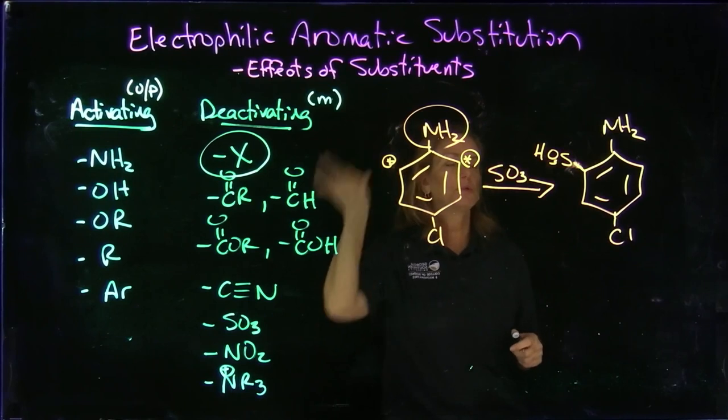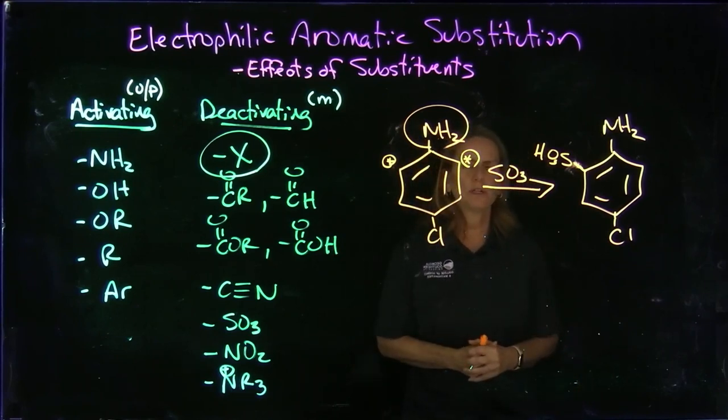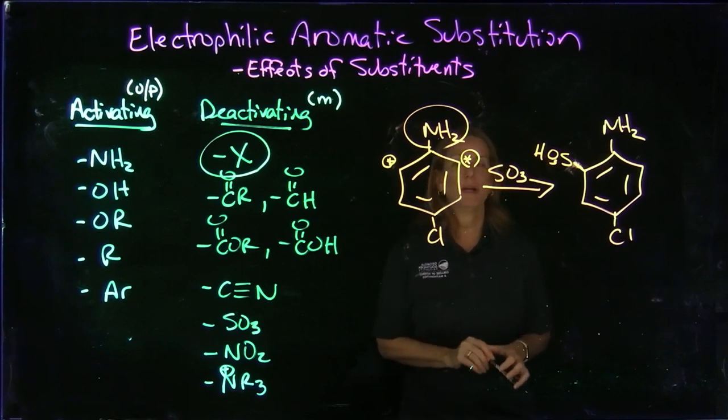And we can have three groups or four groups originally. And just for basic purposes, look at the most activating group. And that will determine whether you'll add the next group, ortho and para or meta.